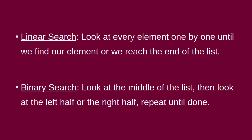Linear search is a very simple search where you look at every element one by one until we find the element we're looking for, or until we reach the end of the list. And of course, if we're looking one by one — that's why it's called linear — it's going to be slow if we have many many elements.